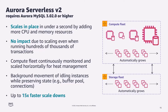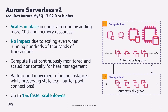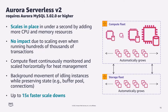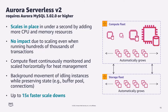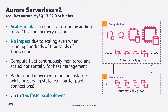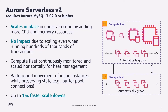Aurora Serverless V2 is an on-demand auto-scaling configuration for Amazon Aurora that automatically adjusts database compute capacity based on your application requirements — scaling capacity to match workload needs and scaling back down when capacity is no longer needed. Scaling happens in real time, in a fraction of a second. If you have spiky, unpredictable workloads, Serverless V2 is a perfect fit to optimize resource costs without sacrificing performance. It scales compute and memory with no disruption to client transactions. Scaling happens in ACUs — Aurora Capacity Units — where one ACU is approximately two gigabytes of memory with corresponding CPU and networking, and ACUs can scale granularly in half-ACU increments.